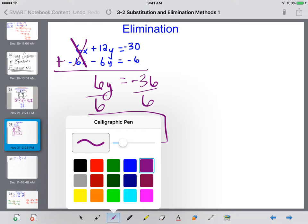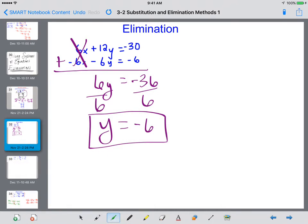Now I've got to find x. System of equations means I solve for y, and I need to get x. So I'm going to plug that y equals negative 6 into the top one.